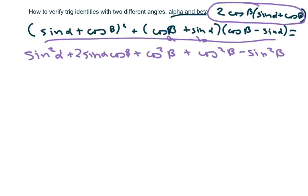And simplifying that, you get these cancel. So we're left with 2 sine of alpha cosine of beta plus 2 cosine squared of beta.